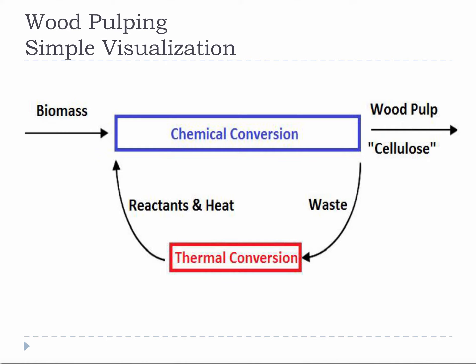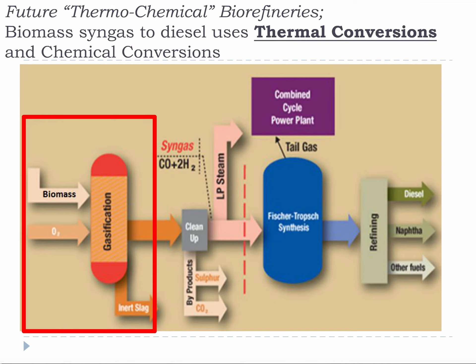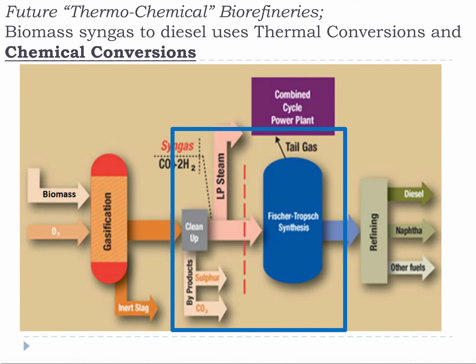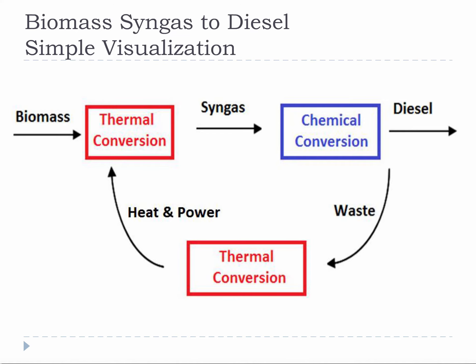Now we will look at an upcoming style of integrated biorefinery. This diagram shows the approximate biomass to Fischer-Tropsch diesel process. Biomass to Fischer-Tropsch integrates thermal conversions, roughly shown inside the red square, with chemical conversions shown inside the blue square. If we take away the process diagram and just think about what we have learned about the conversions, it is really quite simple and much easier to visualize.